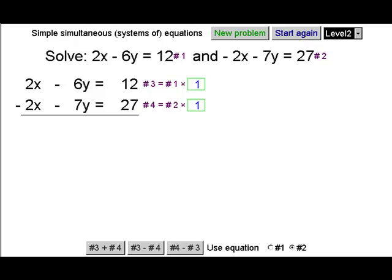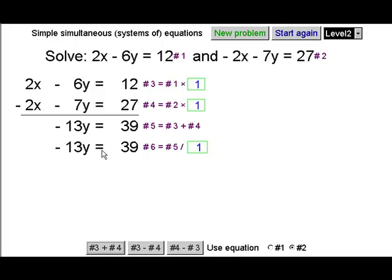Here's a fourth example. Let's see what happens when we add these two equations together. Well, in this case it's the x's that are eliminated. They disappear because 2 and minus 2 gives you 0. So now we have this equation which we solve.